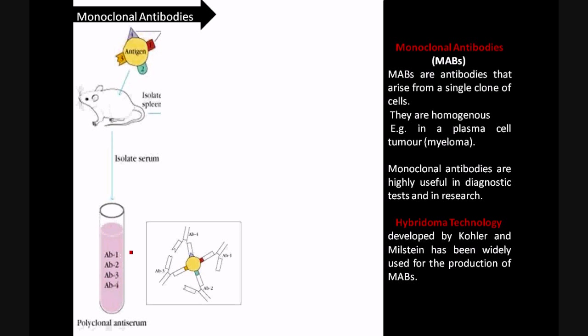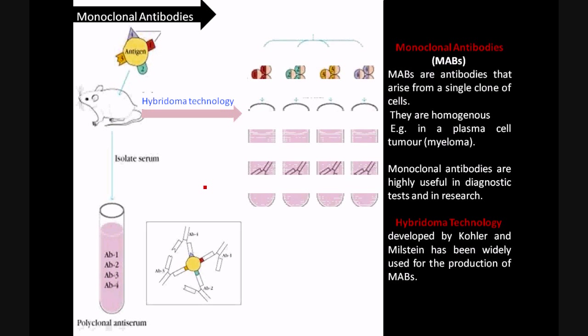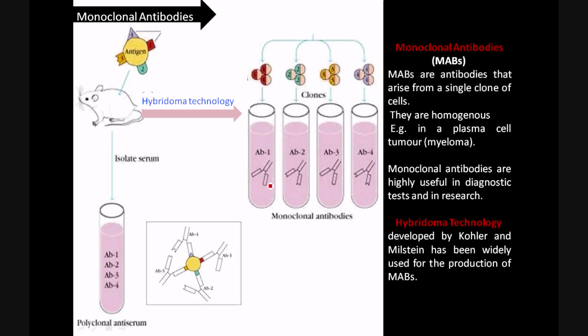So in order to get monoclonal antibodies, that is antibodies that are directed against a single epitope, a technology was developed by Köhler and Milstein called hybridoma technology. You can see right here this is the monoclonal antibody in this tube. There is a single antibody directed against epitope 1.